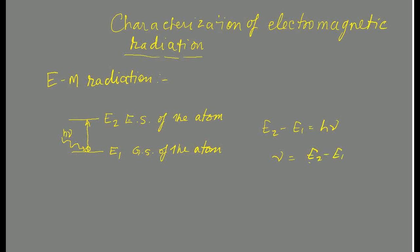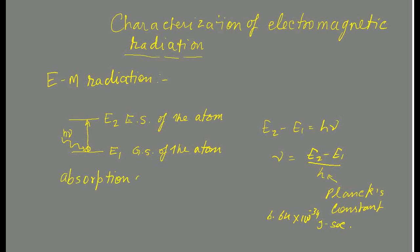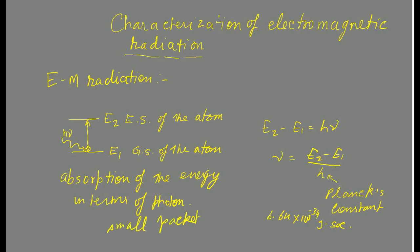Therefore, nu is equal to e2 minus e1 divided by h, where h is Planck's constant. The numerical value of Planck's constant is 6.64 into 10 raised to the power minus 34 joule-seconds. This describes the absorption of energy in terms of the photon, which is basically a small packet of energy.